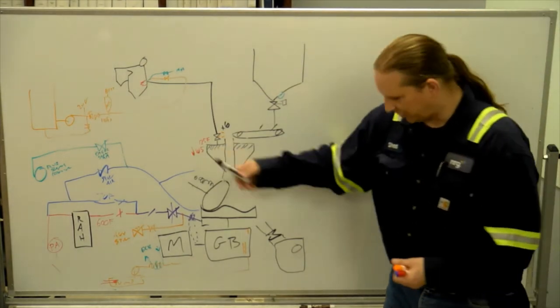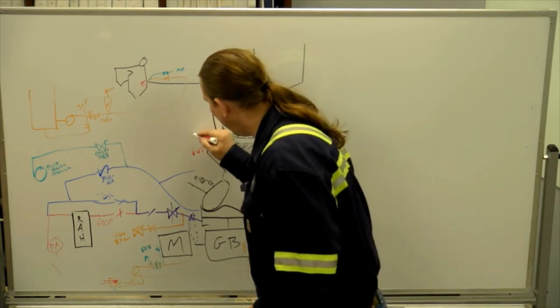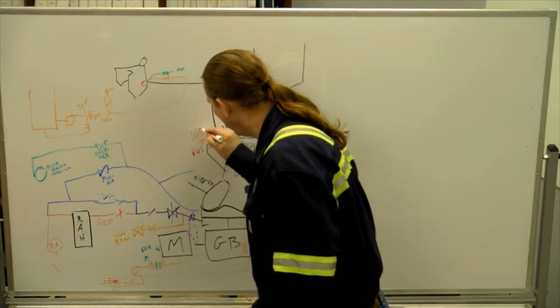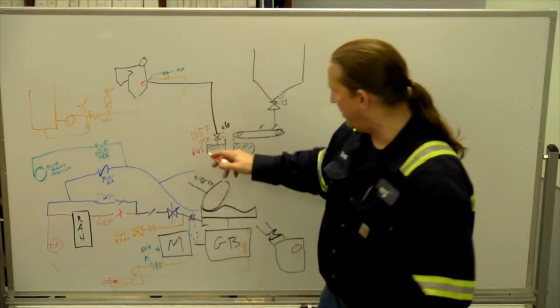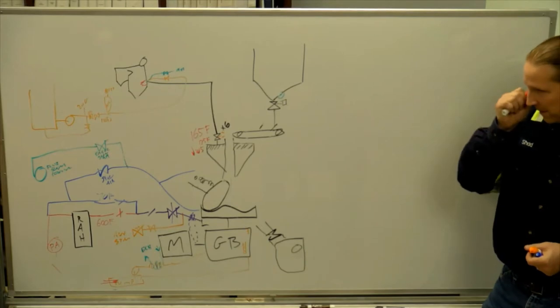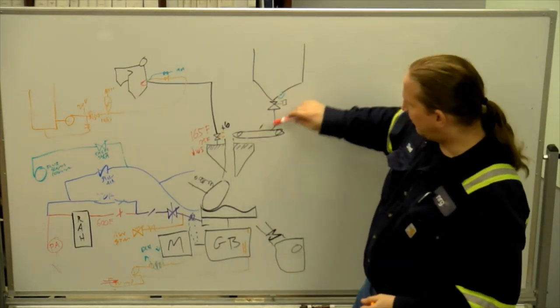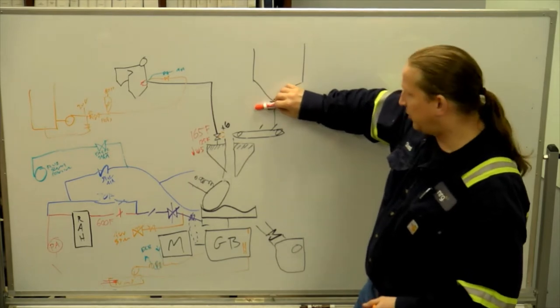High temperature. So a temperature on the outlet of 165 will trip. No coal. So if the feeder trips, if the coal gate goes shut, both of those things will trip the mill.